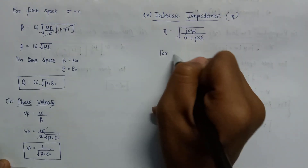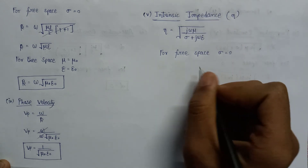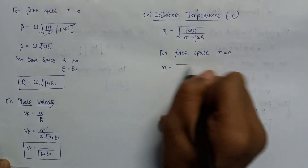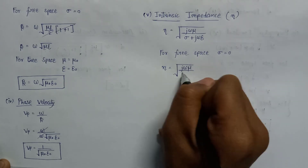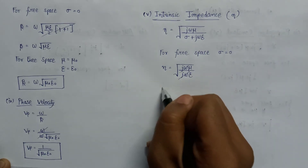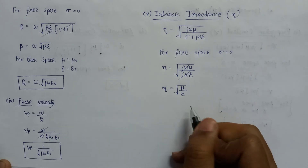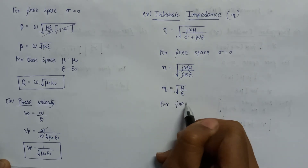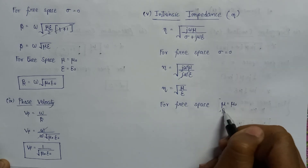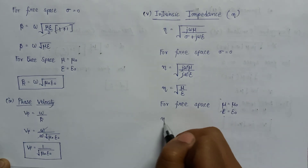For free space, sigma equals zero. On putting sigma equal to zero, we get the intrinsic impedance as the square root of j·omega·mu divided by j·omega·epsilon. The j·omega terms cancel, leaving the square root of mu over epsilon. Since for free space the permeability equals mu zero and the permittivity equals epsilon zero, replacing both terms gives the intrinsic impedance as the square root of mu zero over epsilon zero.